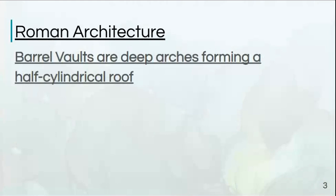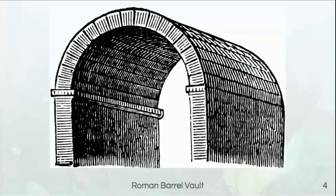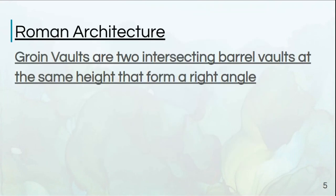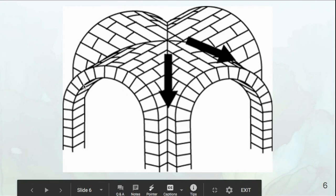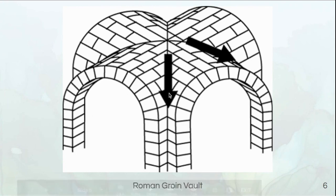The first one is a barrel vault, and it's a deep arch forming a half cylindrical roof — so we have half of a cylinder here. The second type of vault is a groin vault. This is two intersecting barrel vaults at right angles, where one barrel vault and a second barrel vault meet at a right angle and form these groins.